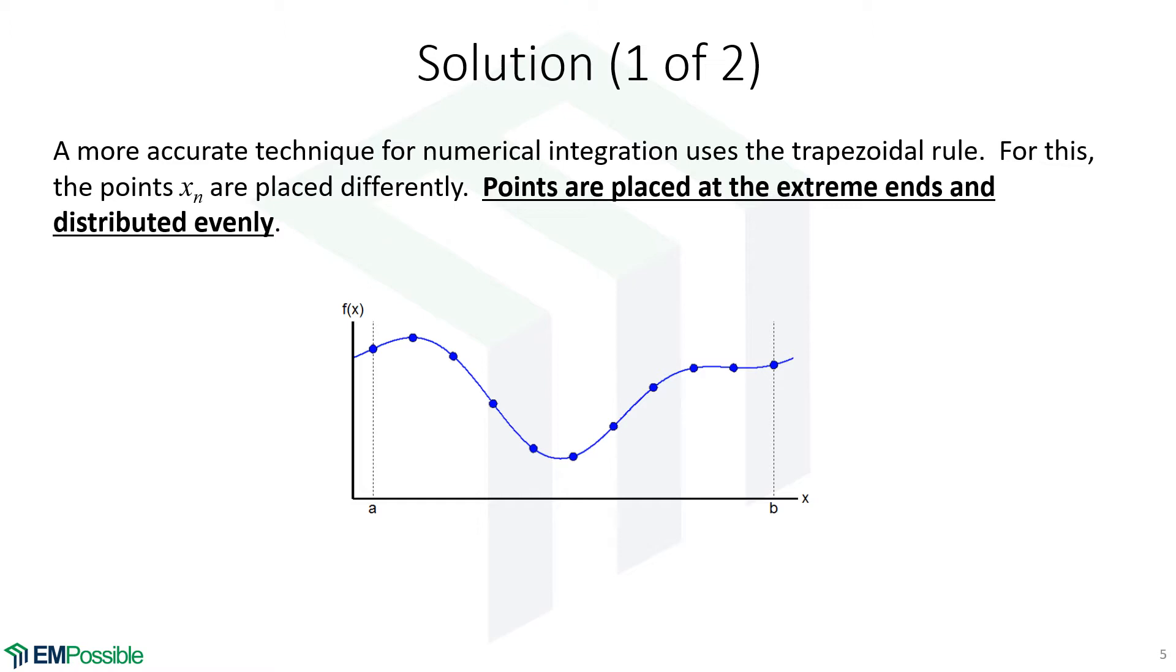Now, notice what's different here. The end points, this falls exactly on a, and this falls exactly on b. So with our discrete integration, we were a half cell over, if you remember. But now our end points fall exactly on a and b, but the points are still distributed evenly.